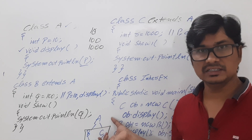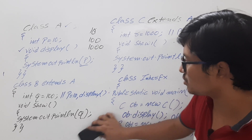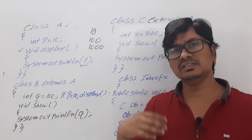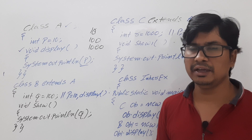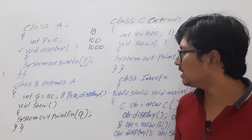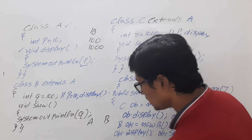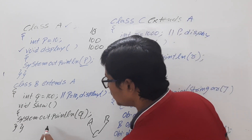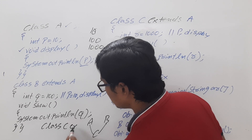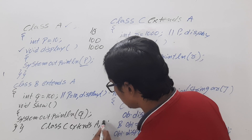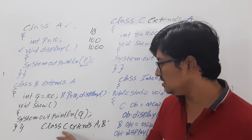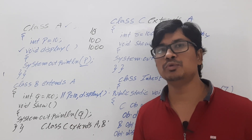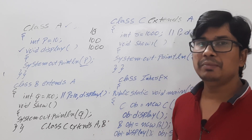We have covered single level, multi-level, and hierarchical inheritance. An important point: multiple inheritance in Java — where class C tries to write 'class C extends A, B' — is not allowed and gives an error. Without discussing the interface concept we cannot implement multiple inheritance in Java.